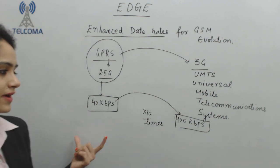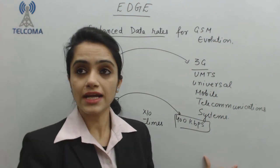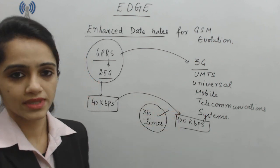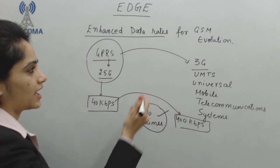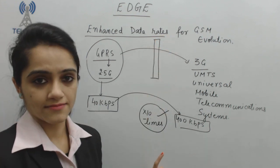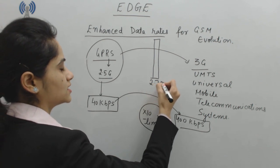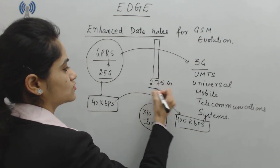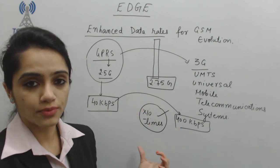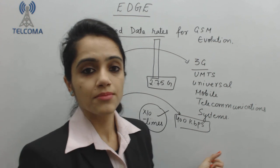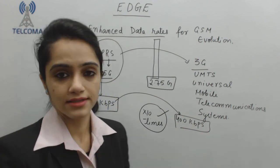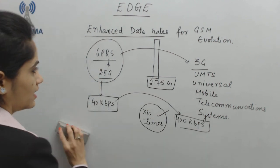From 2.5G to 3G we are expecting a jump of almost 10 times. Whenever we are demanding a jump of 10 times, we achieved another technology which is 2.75G. That is why it is in the center of 2.5G and 3G — it is in the middle of both generations.